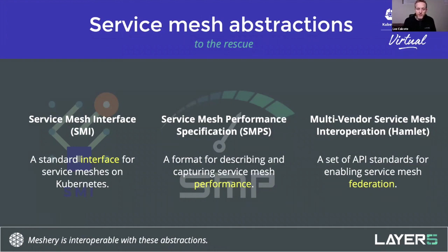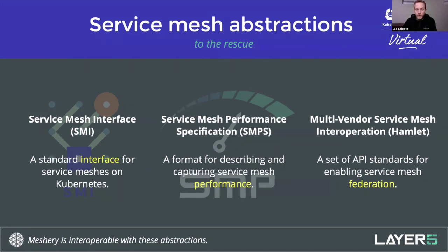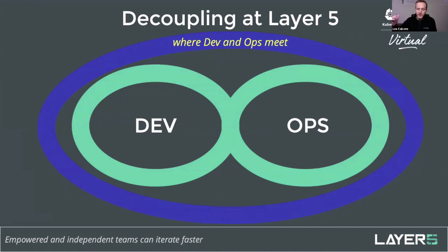I'm fortunate to be a maintainer of SMI, and we'll describe it more deeply in a couple of slides. It's focused on lowest common denominator functionality across service meshes. SMP — service mesh performance — is focused on describing and capturing the performance overhead of a service mesh, characterizing that value. Hamlet, or multi-vendor service mesh interoperation, has a couple of APIs focused on federation — I like to think of it as service catalog exchange. Each is complementary and addresses a particular area around service meshes.